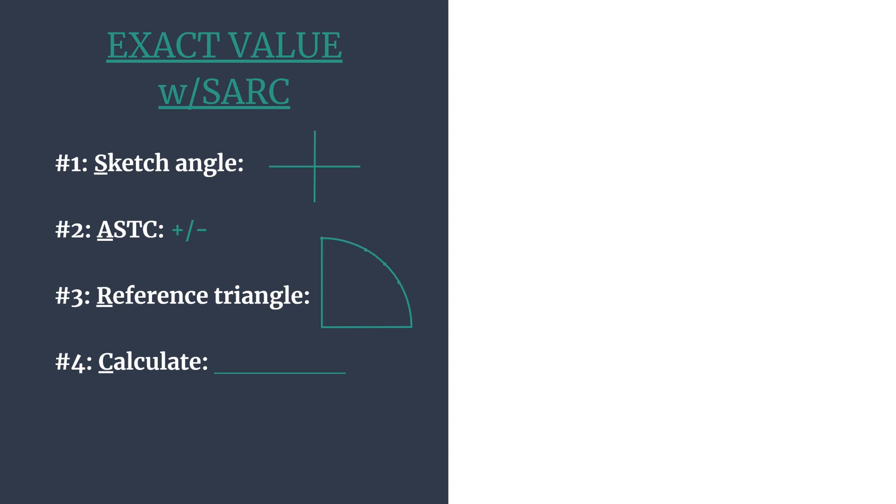Third, we'll go to R. We'll find our reference angle and then the special right triangle and coordinates that go with that angle. And finally, step four, the C will calculate our trig ratio.